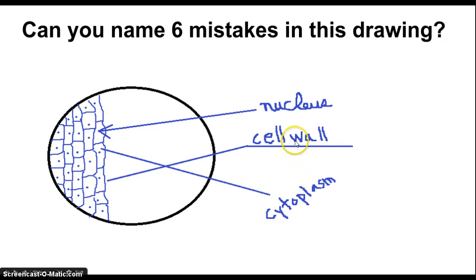Avoid crossing lines at all costs. The word cell wall is written on the label line. We want to avoid this. When you are labeling a lot of structures within a drawing, this can make your drawing look a little confusing and messy.